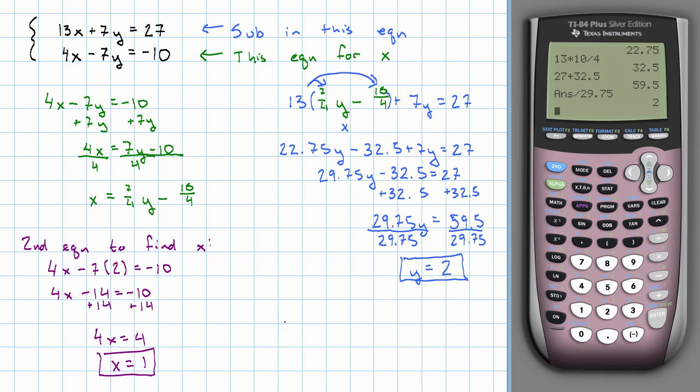Let's check and make sure that worked. 13 times 1 plus 7 times 2. That really does work out to 27. So we are correct.